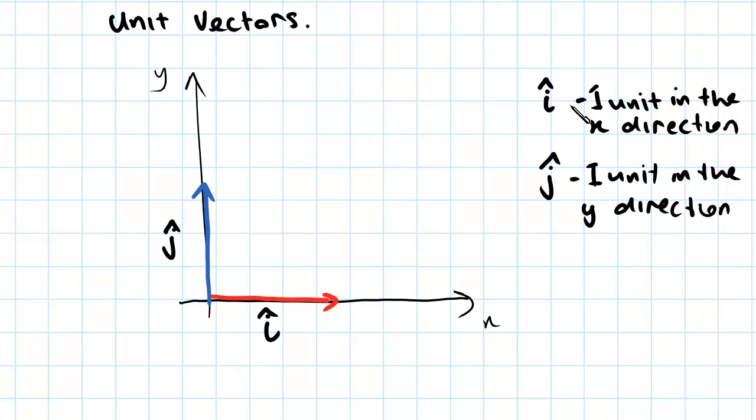Now vector i we're defining as being one unit long in the x direction. So that length there is one, and j we are defining as being one unit long in the y direction. And we'll see why we do this when we come to doing an example.